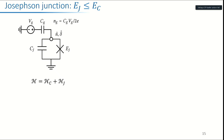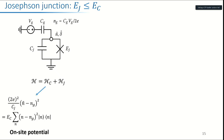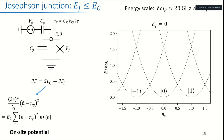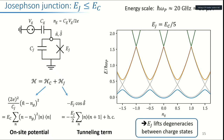We've seen the Josephson junction in all talks this morning. If we consider just the charging energy, we get a spectrum in the charge basis with displaced parabolas, where ng is the gate charge. As soon as we have some non-zero coupling between charge states with the Josephson element, we open up a gap in the spectrum — this is a trivial gap.